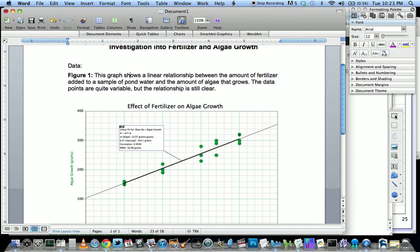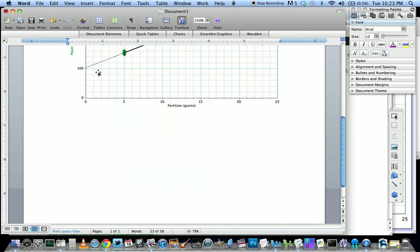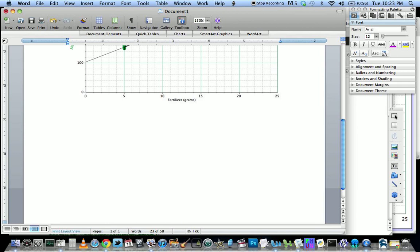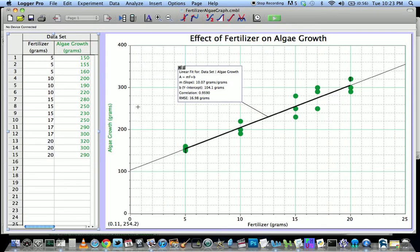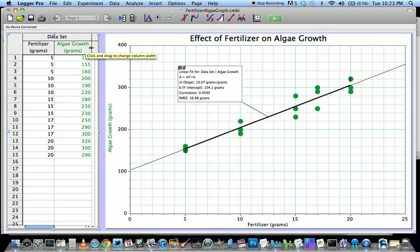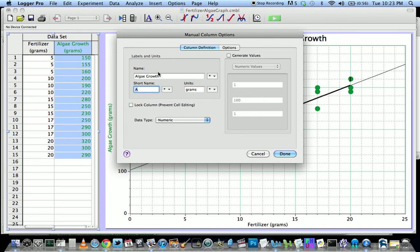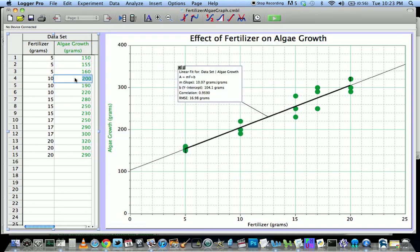The other thing you always need to include in your data section is a data table. One really easy way to do that is to go back into Logger Pro and get it here. If you're going to do that, you should make sure that the columns are showing the full words of what you've included here. Remember you can include the name and the units as well as a short name of whichever variable you measured.